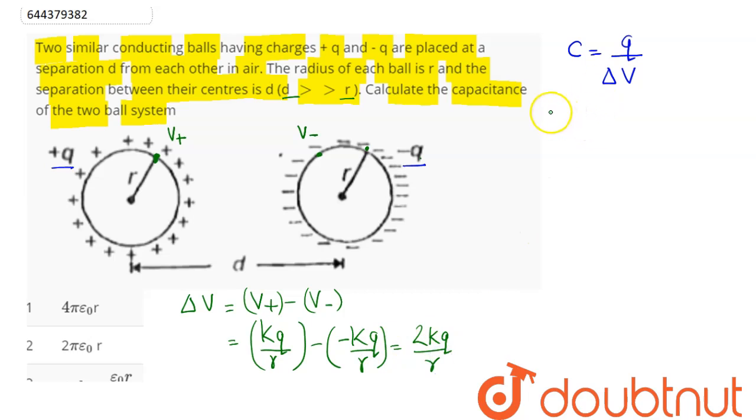Now substituting the value we have the capacitance given here as C is equal to q divided by, in the denominator we have here as 2kq divided by r. Now q and q cancels out.